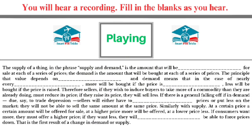The supply of a thing, in the phrase 'supply and demand,' is the amount that will be offered for sale at each of a series of prices. The demand is the amount that will be bought at each of a series of prices.